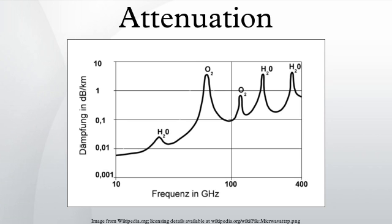Thus, red, orange, and yellow wavelengths are absorbed at higher water depths, and blue and violet wavelengths reach the deepest in the water column. Because the blue and violet wavelengths are absorbed last compared to the other wavelengths, open ocean waters appear deep blue to the eye.